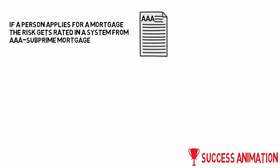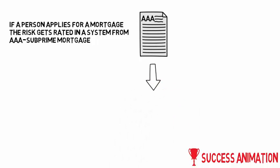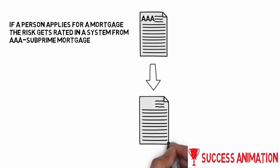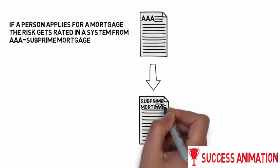It's just an alphabetical system between AAA and subprime mortgage. There are also BBB and B and stuff like that, rated after the risk of not paying back the mortgage.